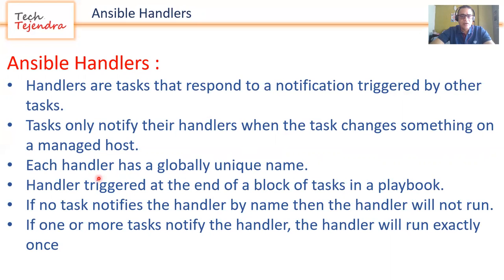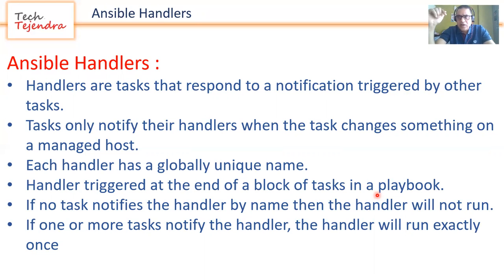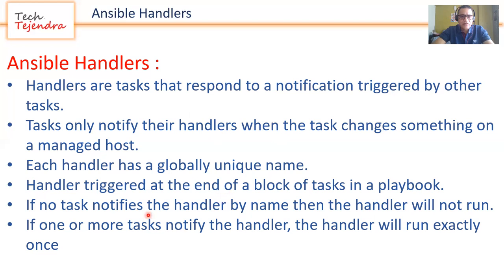Each handler must have a globally unique name. Handlers are triggered at the end of the block of tasks in a playbook — this is the important point. Suppose task one, task two, and task three are in a playbook, and task one notifies a handler. The handler will only start after all tasks — task one, task two, and task three — have completed.